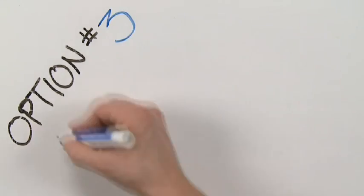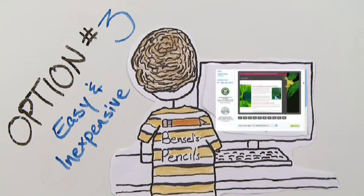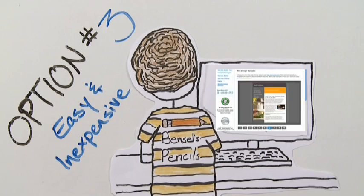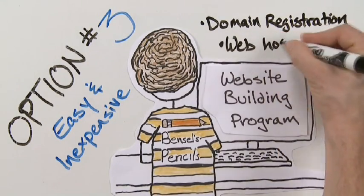A third option that's simple and pretty affordable is for Bencils to use a website building program. Using this method, someone at Bencils can choose from hundreds of existing styles and then fill in the blanks to customize their site. Some companies include a web-based site building tool as part of a package that includes domain registration and web hosting.